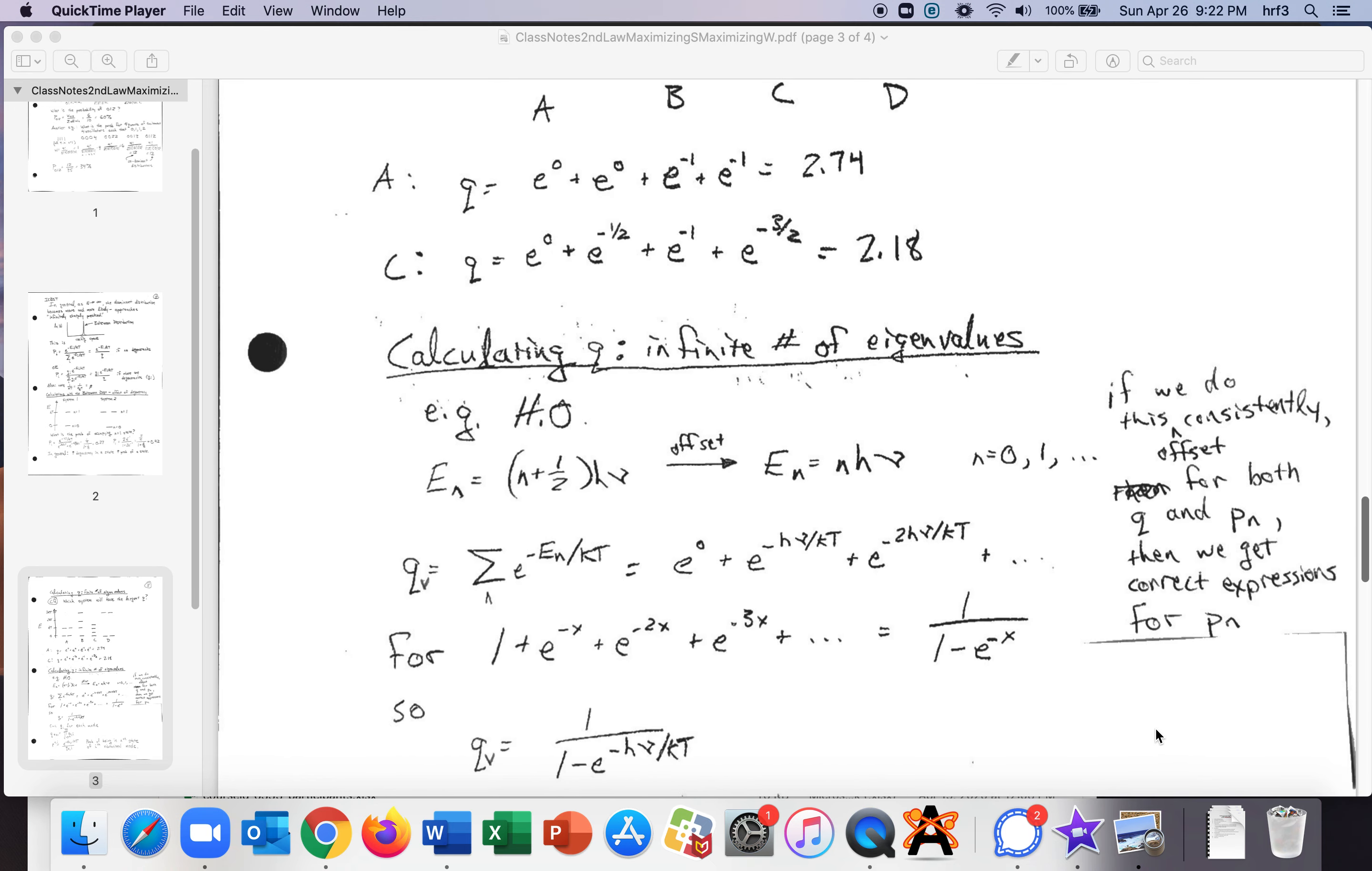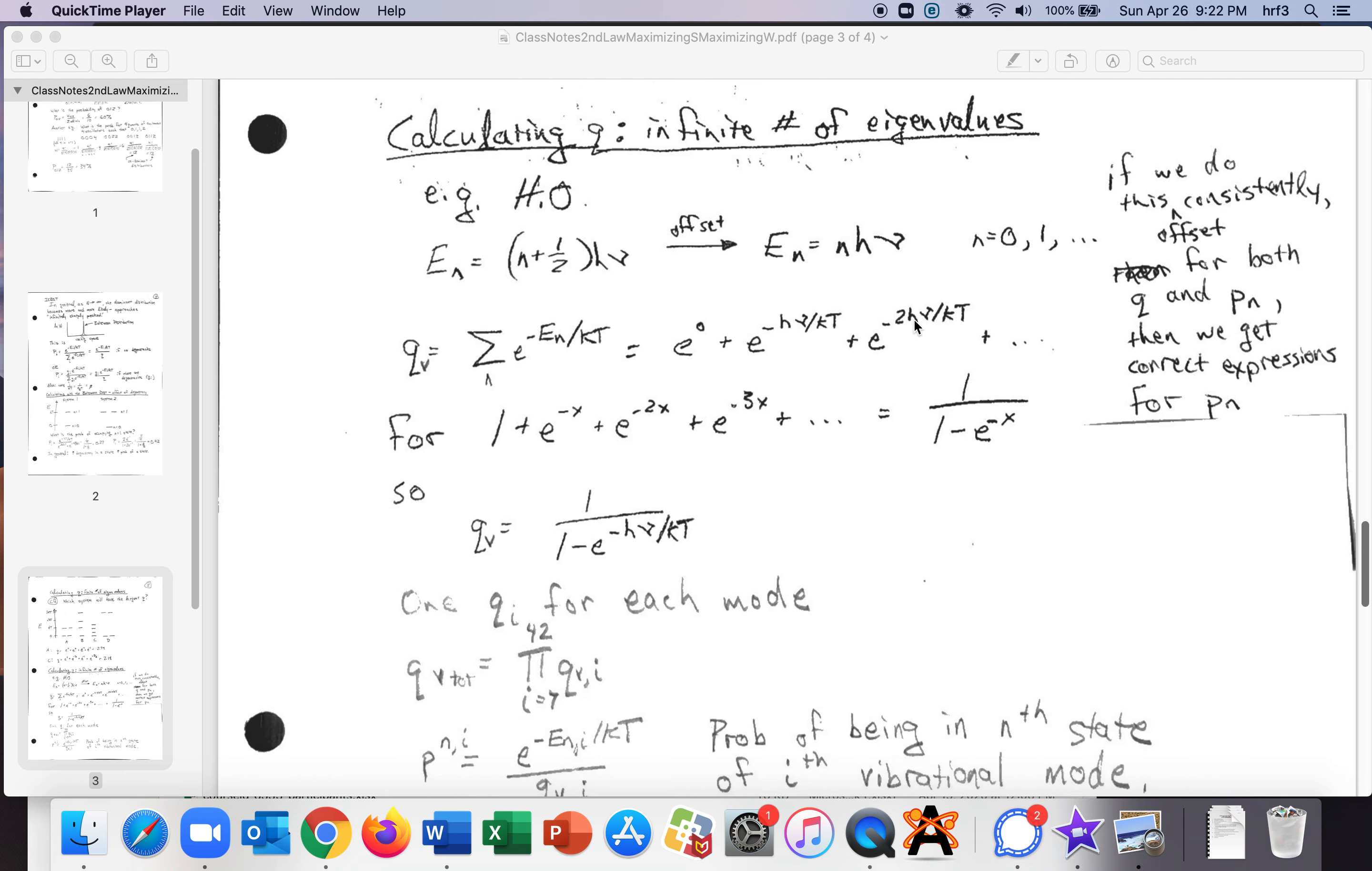All right then let's talk about calculating q if we have an infinite number of eigenvalues. So it's often the case that like for example we'll have the harmonic oscillator it has these eigenvalues but n can go from zero up to infinity. This one half makes the math awkward we can offset it and if we do that consistently for q and pn we'll end up getting the correct expressions for the probabilities of being in state n and the math is a little bit messier here than you might expect so you'll just have to trust me on that one or if you're curious i can find a pdf to send to you.